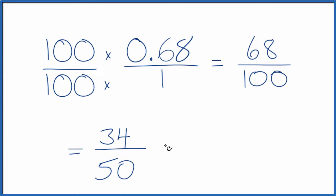And we can even simplify this further. We have even numbers here. 34 divided by 2 is 17, and 50 divided by 2 is 25. So the decimal 0.68 can also be represented by a fraction 17 over 25. They are equal.